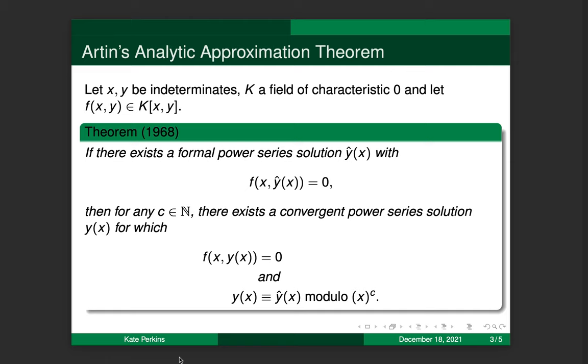And we're going to let little f be a polynomial in x and y, just a regular polynomial, not like a formal power series. And we're going to suppose that we already have a formal power series solution, y hat of x. So the theorem says that if we have that, a solution meaning that if we substitute y hat of x into little f for y, then the x terms cancel and we get zero.